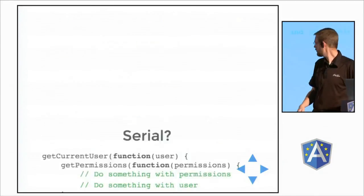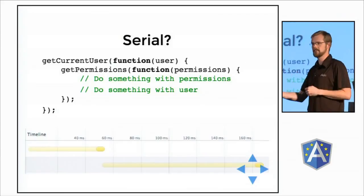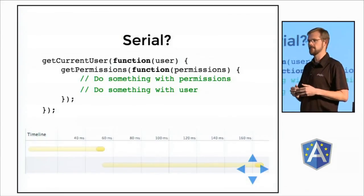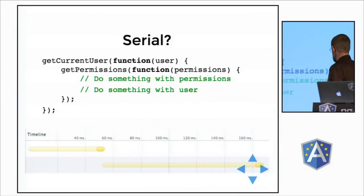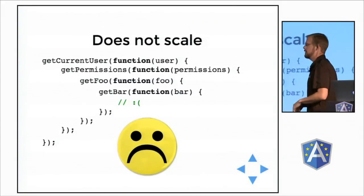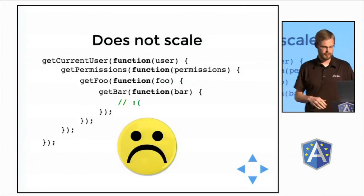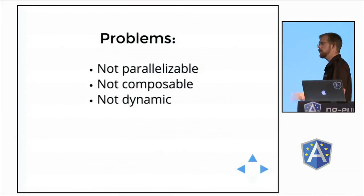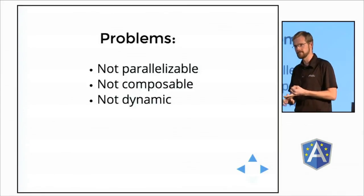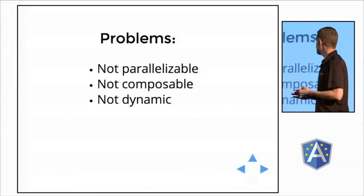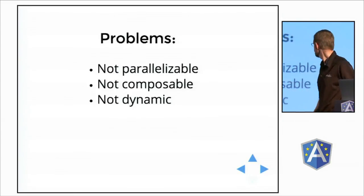There's an obvious solution: we'll just serialize it. We'll say get current user, and when that callback gets called, we'll call get permissions, and when that callback gets called, now we have access to both the user and the permissions. But let's say we need to do two more things — now we have the pyramid of callback doom, and a big frowny face appears on your code. There are three problems with this approach: it's not parallelizable, it is not composable, and it is not dynamic — we had to define the structure at compile time, statically.